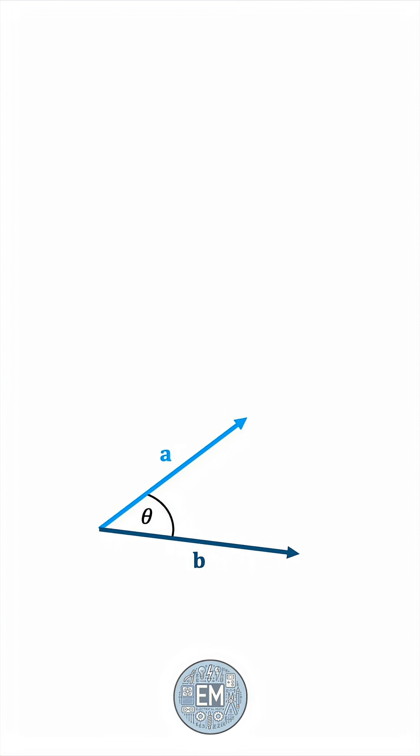We'll start by completing the triangle with this vector and noting that this vector must be b minus a. And then, using the cosine rule, we'll relate the lengths of the three vectors to the angle theta.